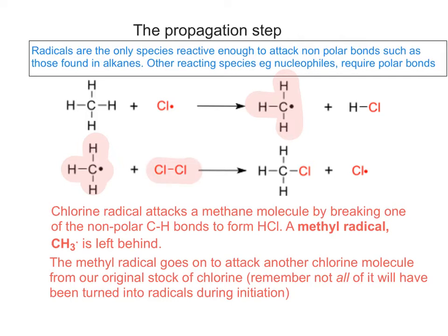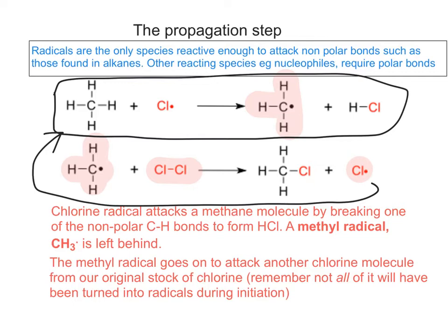And what this process forms is chloromethane and another chlorine radical, which can go on and do the first step above. So this other chlorine radical can go on and do the same as what's in the first part of the top. So the propagation step happens over and over and over and over again.